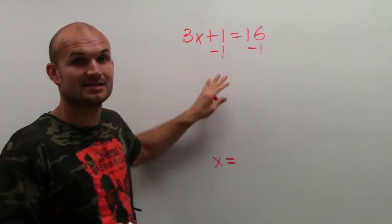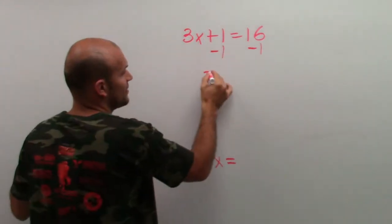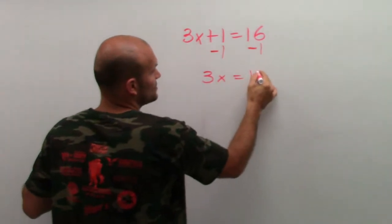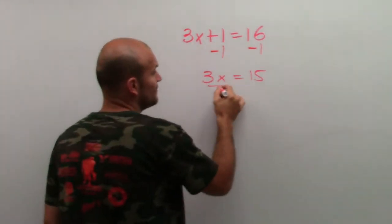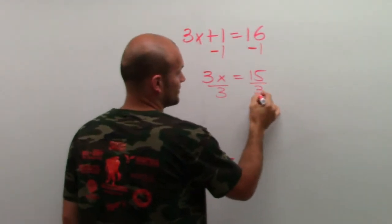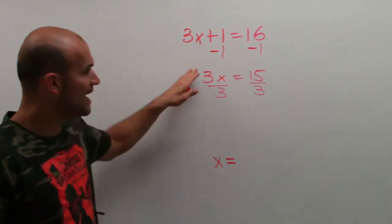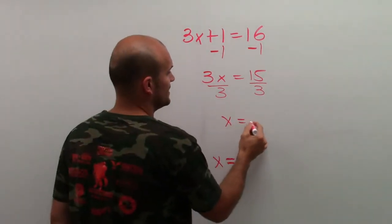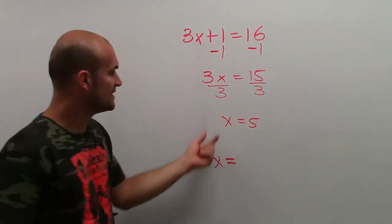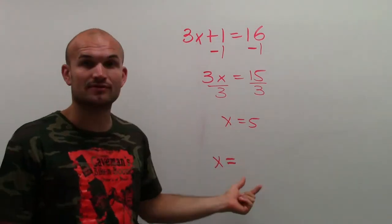That is going to get us to 0, which will just leave us with 3x equals 15. Now, to undo multiplication, I'm going to use the division property of equality. And then that is going to leave me 3 divided by 3 leaves me 1. 1 times x is now just going to leave me x equals 5. So now I could say the value of x is equal to 5.